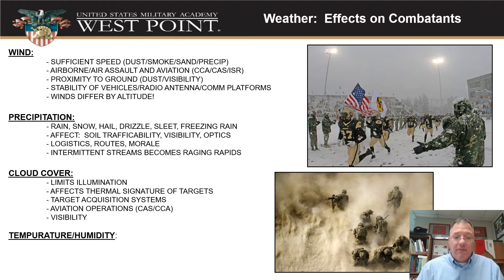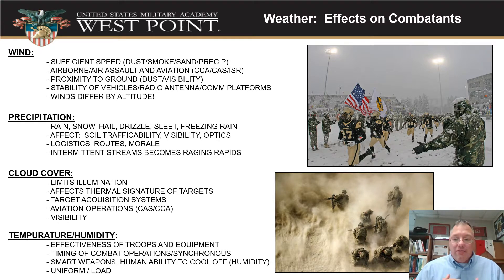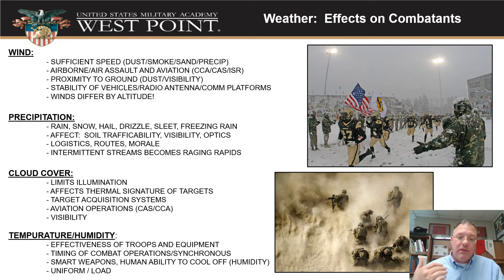Obviously, when cloud cover comes all the way to the ground we call that fog, which has a huge impact on movement and visibility. Moving on to temperature and humidity — hopefully you're familiar with this from being out during summers at Camp Buckner. Extreme heat with high wet bulb temperatures creates problems: it slows down your troops, creates extra logistics requirements for water, and forces you to avoid operating during the hottest parts of the day.